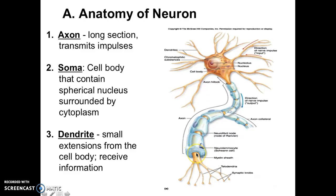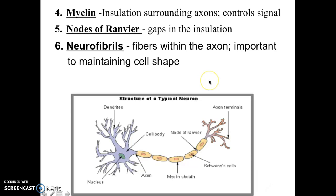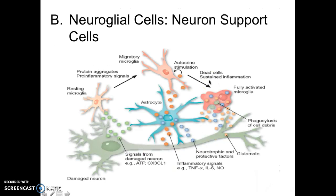You would have to cut the axon in half and look inside to see your neurofibrils. That's the structure of the neuron. Now we're going to talk about helper cells, because a neuron can't do it all by itself. The neuron's job is to transport signals, but there are a lot of other things that have to occur. The helper cells are called neuroglial cells — they are neuron supports.